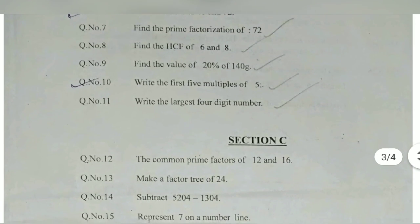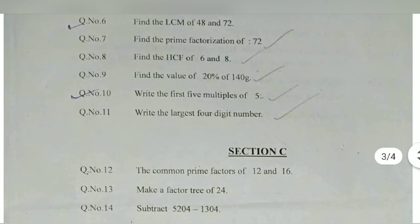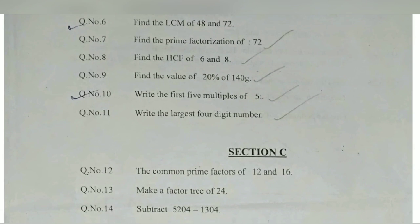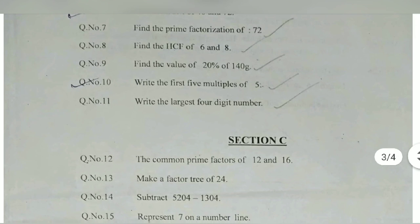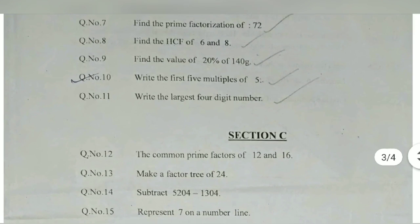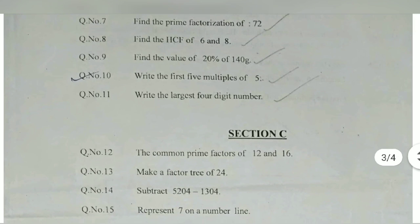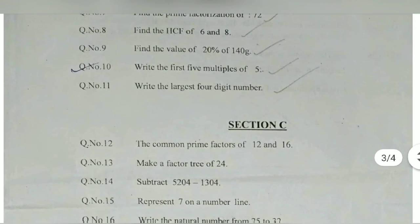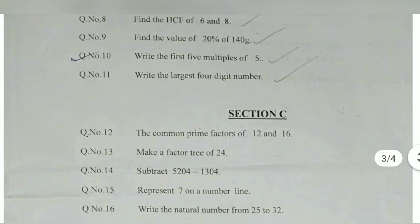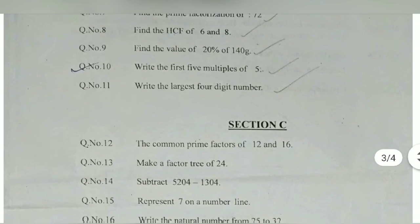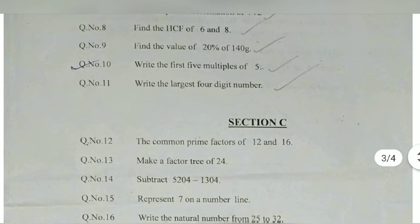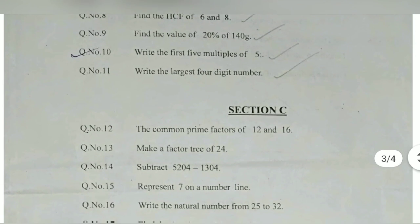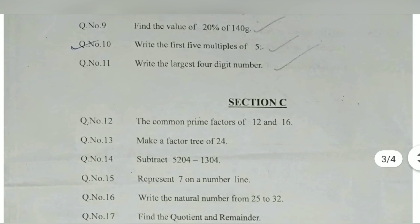Find the LCM of 48 and 72. Find the multiple of 48 and 72 and find out the lowest common multiple. Find the prime factorization of 72. We know the prime numbers 2, 3, 5, 7, etc. Find the HCF of 6 and 8, highest common factor. Find out the 6 factors and 8 factors, then find the common factors and highest common factor. 20 percentage of 140 grams means 20 divided by 100 into 140.